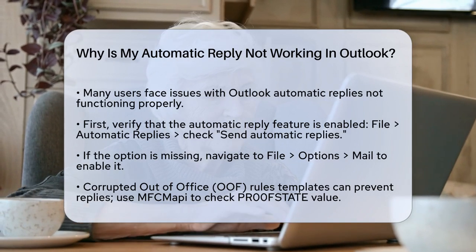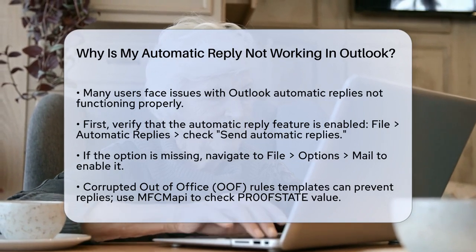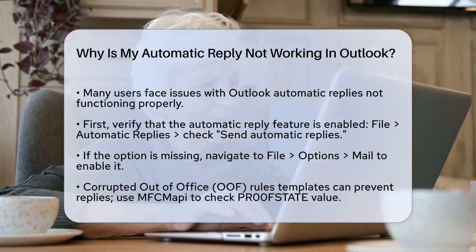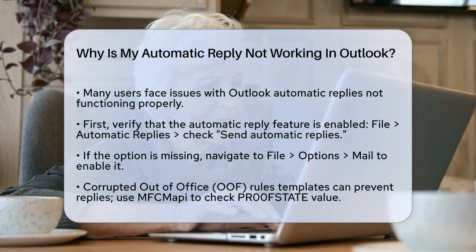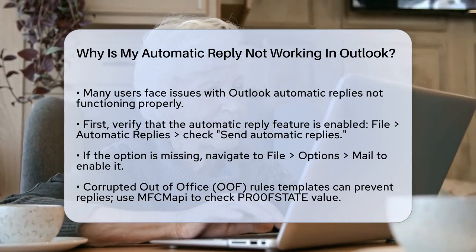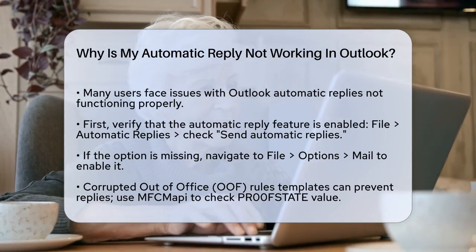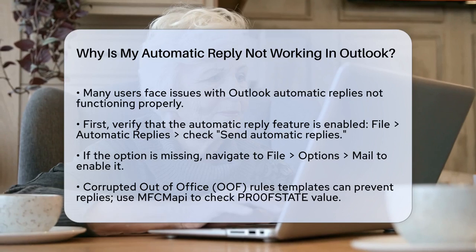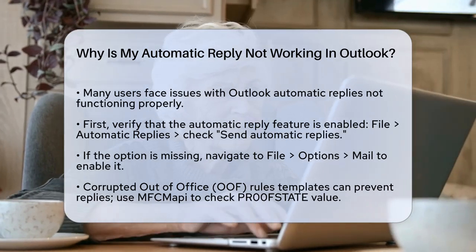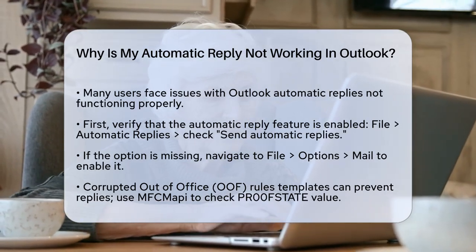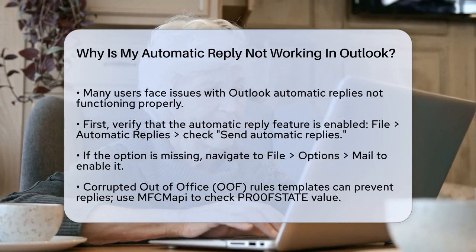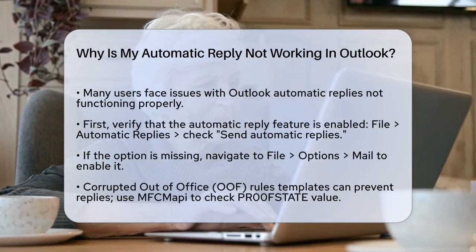First, let's check the basics. Ensure that the automatic reply feature is actually turned on. In Outlook, go to File, Automatic Replies, and make sure the Send Automatic Replies checkbox is selected. If you can't see this option, you might need to go to File, Options, Mail, and enable it there.